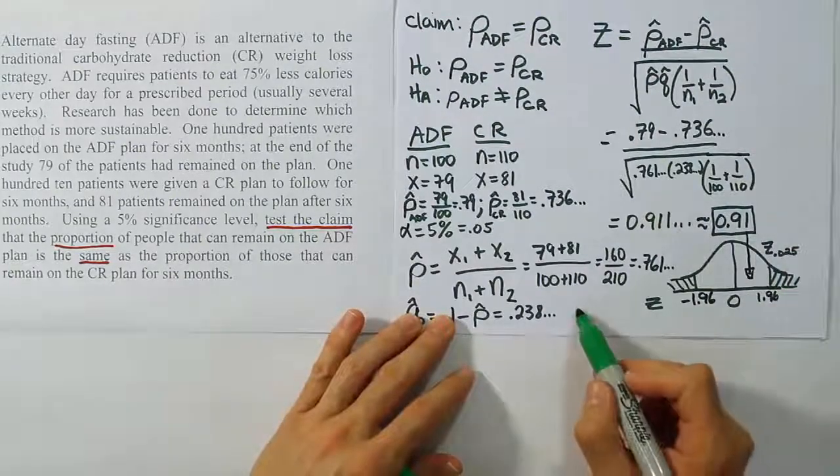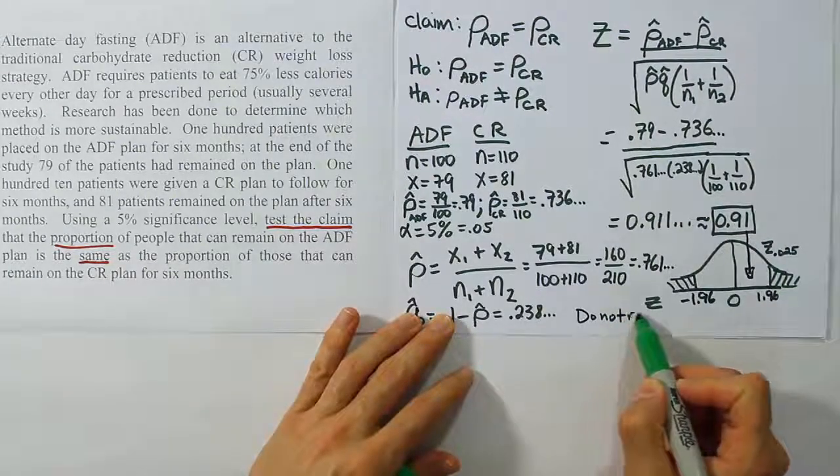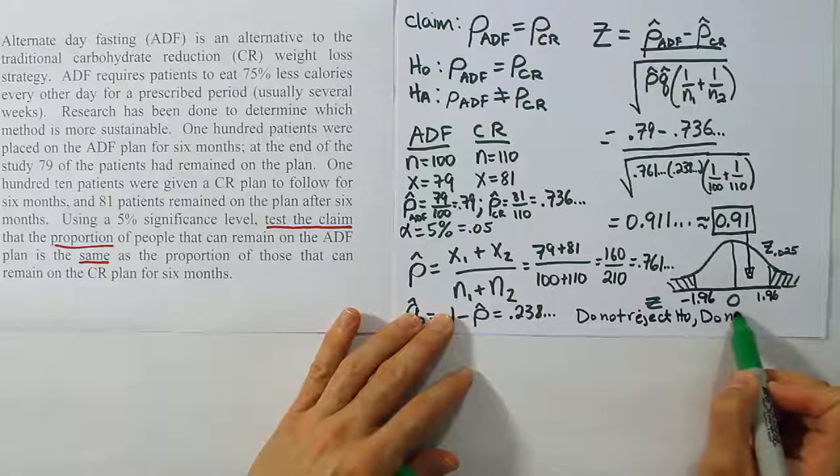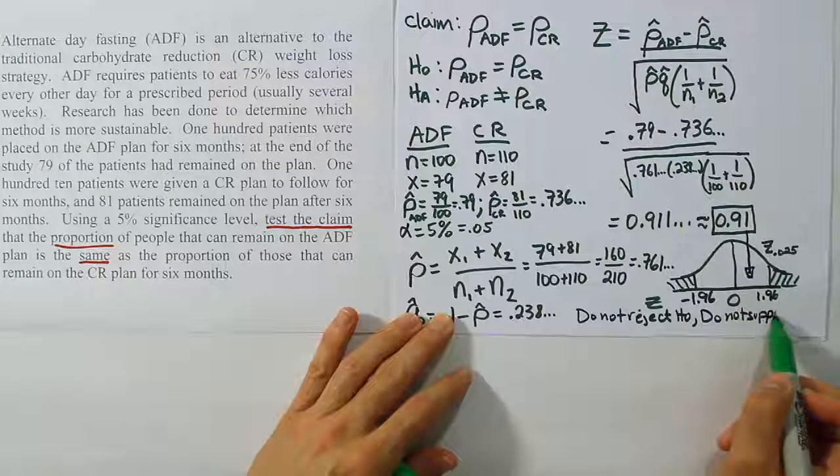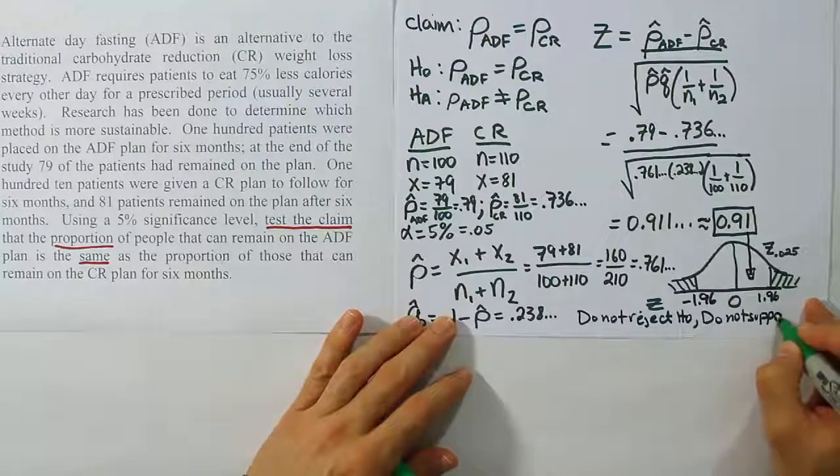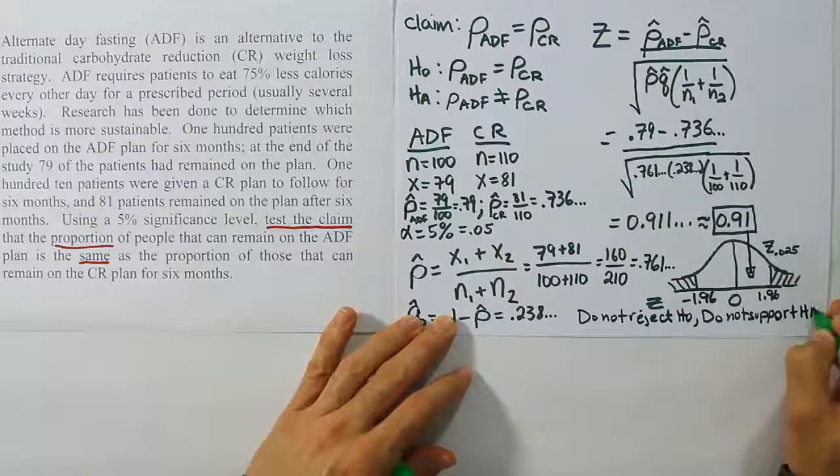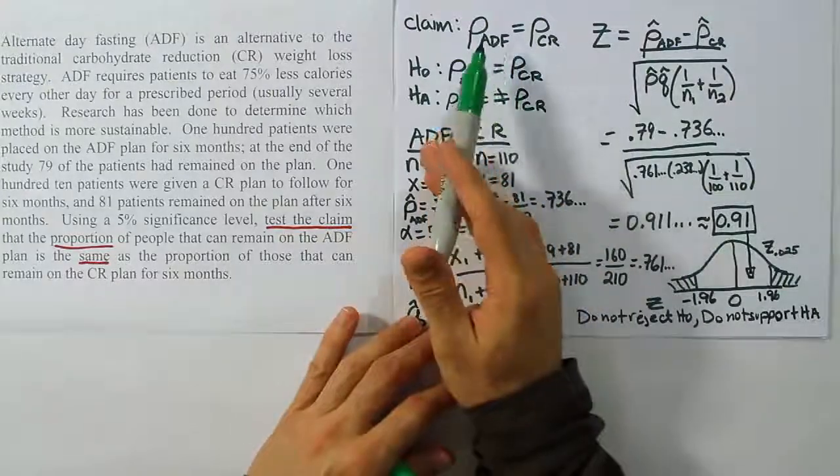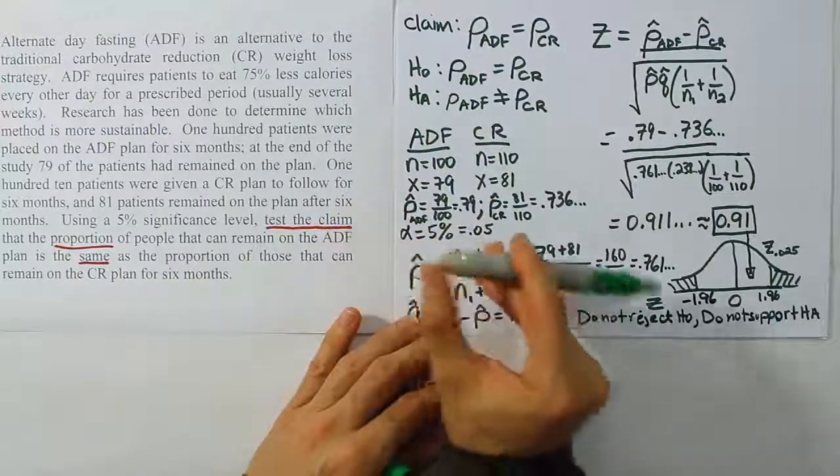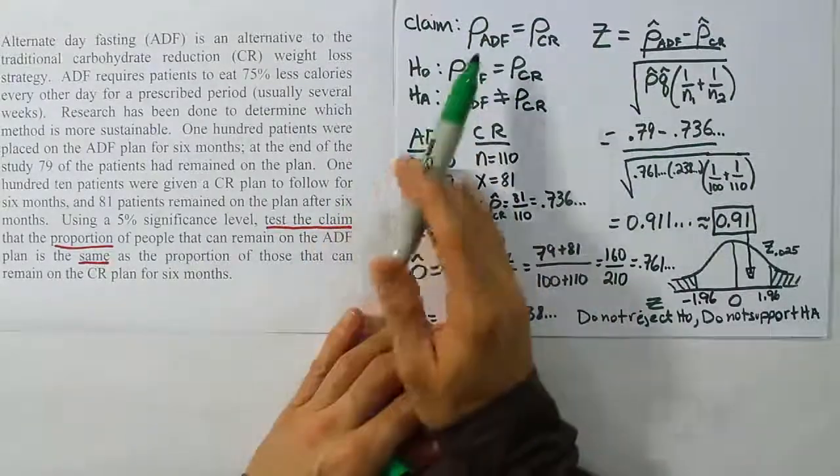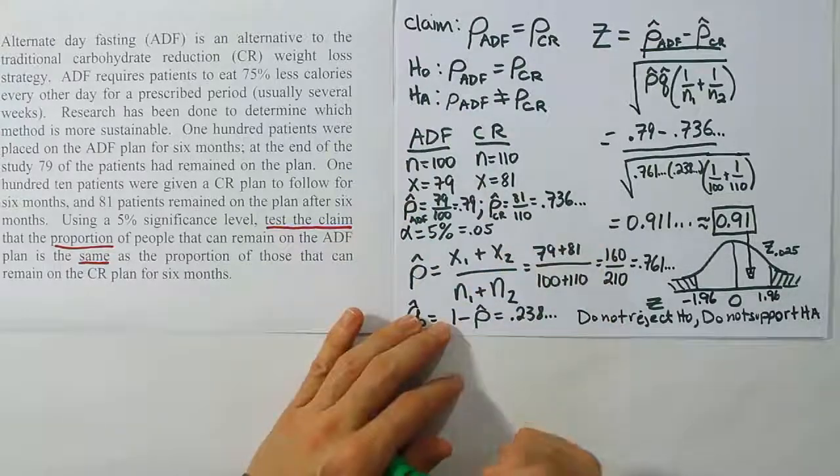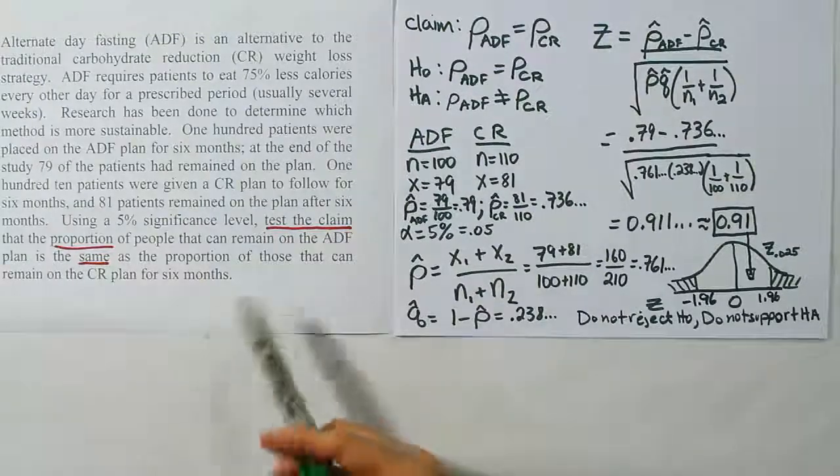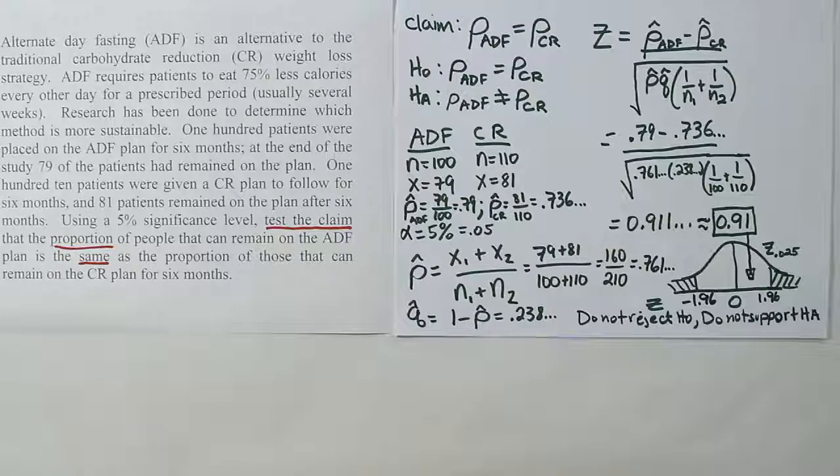So our conclusion then, our initial conclusion is do not reject H0. Of course that also means that we do not support HA. Basically what we're saying here is that we do not reject the claim because the claim is H0. Do not reject H0 means we do not reject the claim, which means we're going to leave the claim standing as is. This data does not contradict that. So basically we're saying that for now we'll continue to believe that the proportion that can remain on both diets is in fact the same.